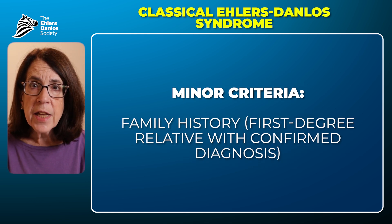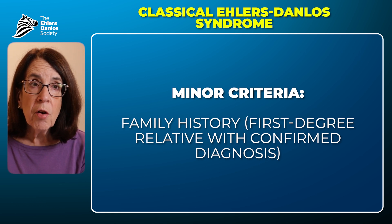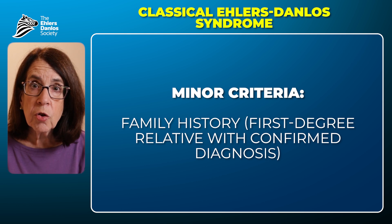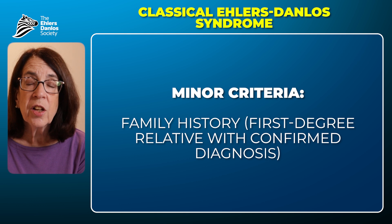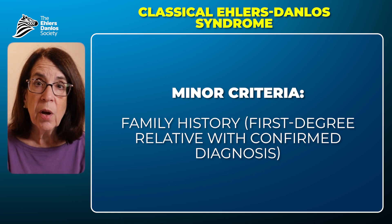The final minor criterion is a family history of classical Ehlers-Danlos Syndrome, where a first-degree relative — a parent, sibling, or child — has a confirmed diagnosis. Once a person has been evaluated using these clinical criteria and meets them, it is recommended that they undergo genetic testing to confirm the diagnosis.